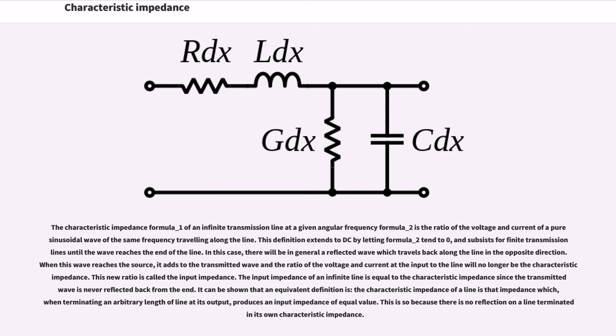In this case, there will be in general a reflected wave which travels back along the line in the opposite direction. When this wave reaches the source, it adds to the transmitted wave and the ratio of the voltage and current at the input to the line will no longer be the characteristic impedance. This new ratio is called the input impedance.